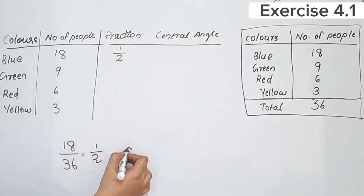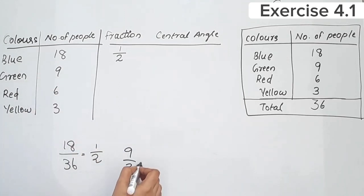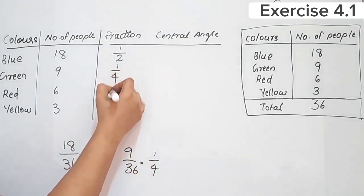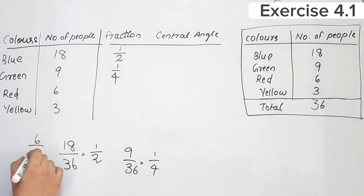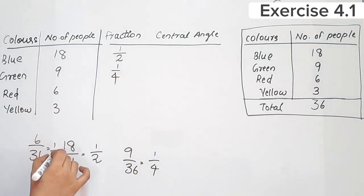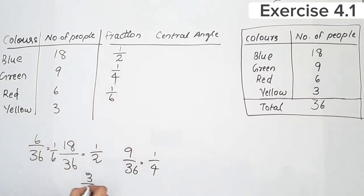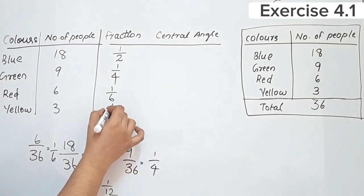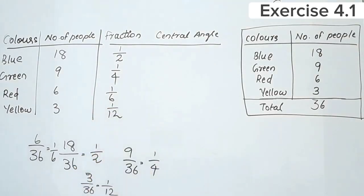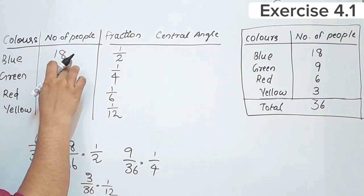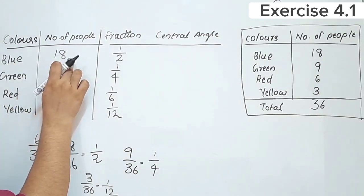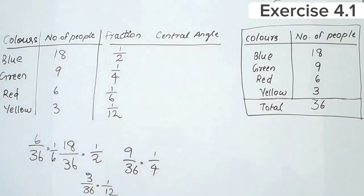Green's fraction is 9 by 36, which equals 1 by 4. Red's fraction is 6 by 36, which equals 1 by 6. Yellow's fraction is 3 by 36, which equals 1 by 12. The fraction is number of people divided by total number of people.